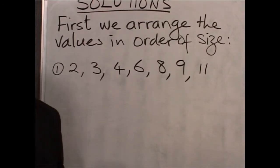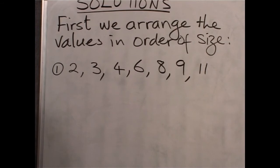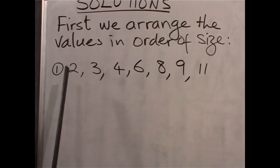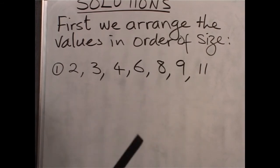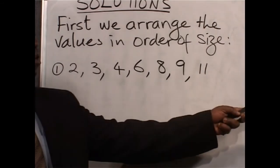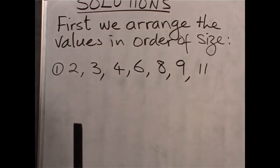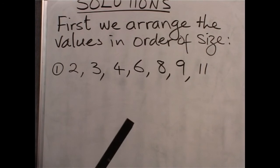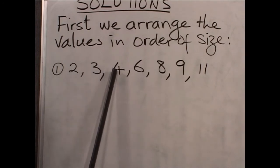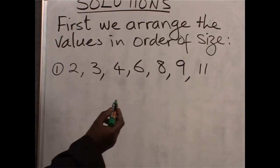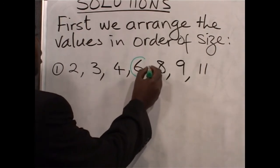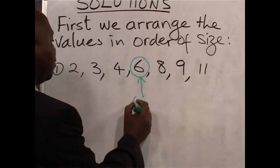Now, to fix the median and the quartiles, first fix the position of the median. We have 1, 2, 3, 4, 5, 6, 7 numbers. The number exactly in the middle is the median. We have 3 numbers on the left-hand side and 3 on the right-hand side. The number in the middle will be the median, so 6 here is Q2.